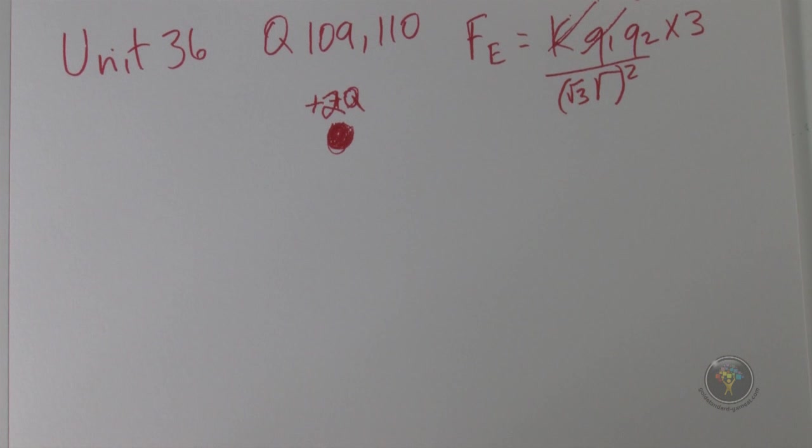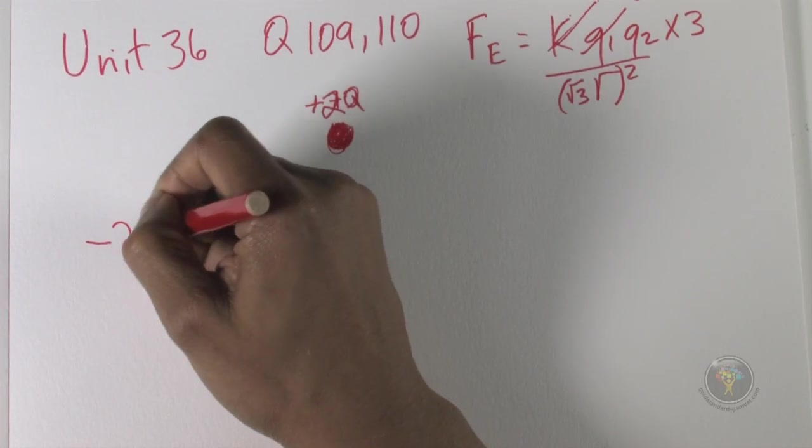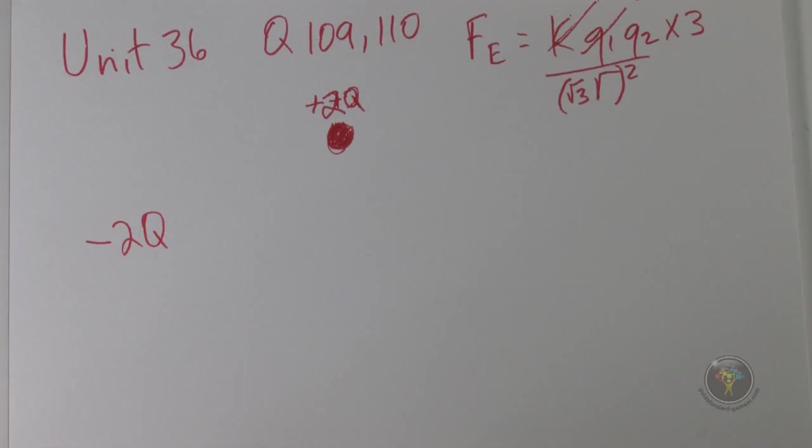Question 110: a small sphere identical to these, carrying a charge of minus 2q, is brought into contact with sphere S. After making contact with the three spheres in the stated order - which is R, S, then T - the charge on the sphere at T is...